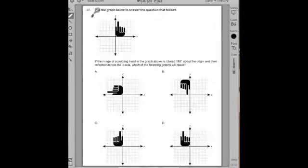So number 37, use the diagram below to answer the question that follows. And then it gives us a diagram, the hand here with the finger pointing up. It says if the image of a pointing hand in the graph above is rotated 180 degrees about the origin and then reflected across the x-axis, which of the following graphs will result?